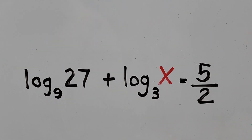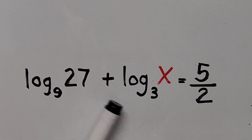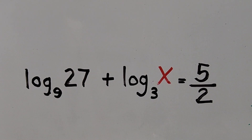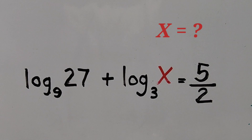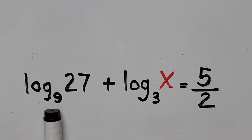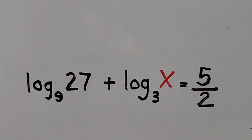Hello everyone, we have a logarithmic equation: log of 27 base 9 plus log of x base 3 equals 5 halves. In this video we'll be solving for the value of x. We'll be using the change of base formula for logarithm.